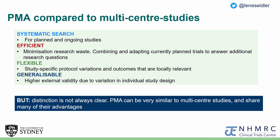After having walked you through each of the steps of PMA, you may ask yourself: why would I do a PMA compared to a multicenter study? One key difference is that a PMA is usually preceded by a systematic search. Whilst multicenter studies usually happen in isolation regardless of similar ongoing studies, PMA incorporates and combines all evidence currently being created to address a certain research question. This also makes a PMA more efficient, since it combines and adopts currently planned trials to answer additional research questions. A PMA does not require the same protocol for each center, but instead allows study-specific protocol variation and outcomes that are locally relevant, making it more flexible, and this can increase generalizability of research findings.